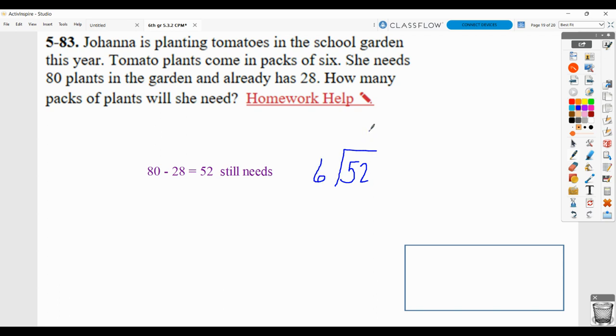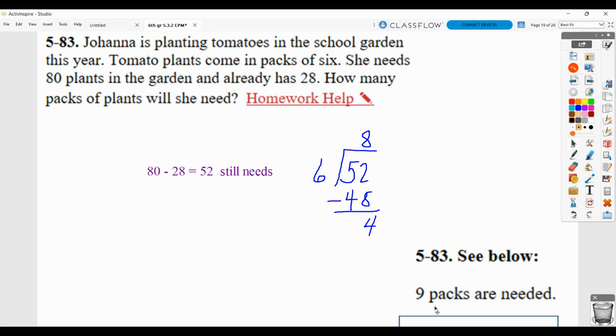And 6 will go into 52 eight times, giving us 48. So you get 8 packs and then 4 tomato plants left. Well, the problem is, if she buys 8 packs, she's still those 4 tomato plants short. So since we have to buy them in packs, we're going to have to round that to 9 packs. So when you do your dividing, you see that we have 8 packs that she can purchase, but she'll still be 4 plants short. So we've got to round it up to 9 packs.